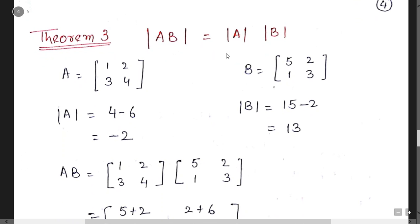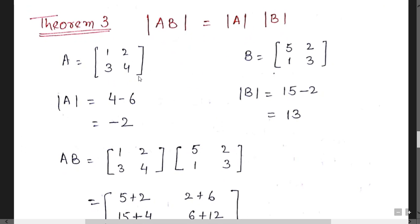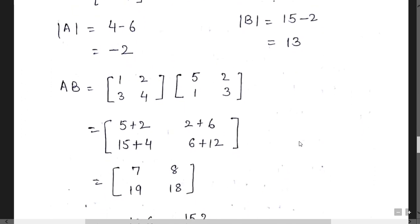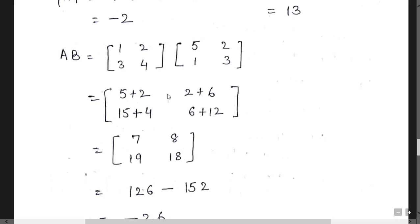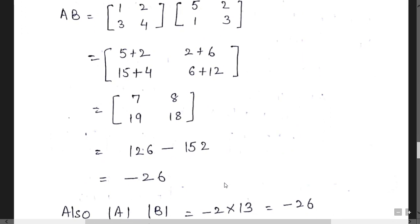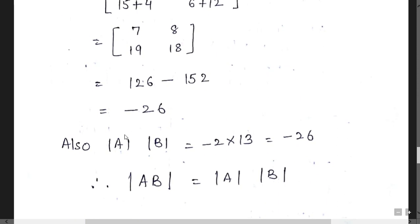Theorem three: the determinant of AB equals the determinant of A times the determinant of B. Suppose A = [1, 2; 3, 4] with det(A) = 4 minus 6 = minus 2, and B = [5, 2; 1, 3] with det(B) = 15 minus 2 = 13. Multiplying A×B and computing its determinant gives minus 26. Separately, det(A)×det(B) = minus 2 × 13 = minus 26. Both values are the same, confirming the theorem.